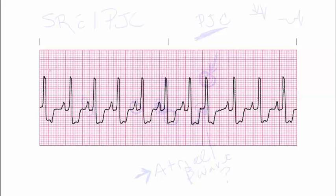We said the rate was close to 100, so this is probably going to be somewhere between a sinus rhythm and a sinus tach — you would definitely want to check that. Remember you can measure from R wave to R wave to determine accuracy. But this is definitely a PJC because there is either no P wave or it is inverted. In this case there is no P wave — P wave is absent, QRS is still narrow. Because the P wave is absent and the QRS is still narrow, it's considered a premature junctional contraction.